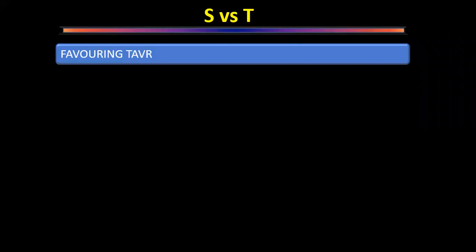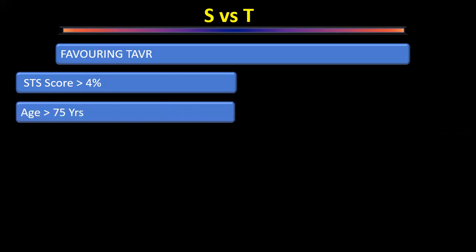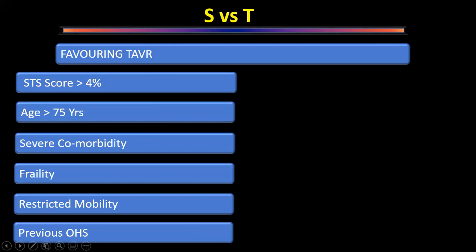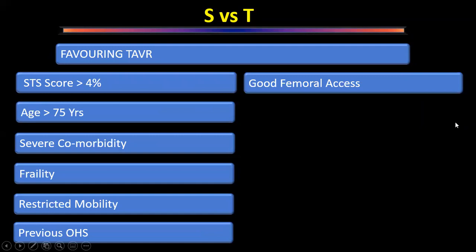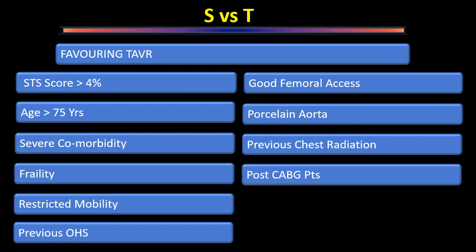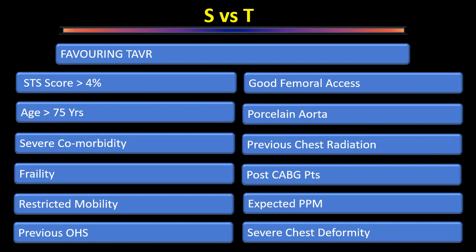Features favouring TAVI: STS score more than 4% (threshold has moved from 15% down to 4%), age more than 75 years, severe comorbidities, frailty, restricted mobility, previous open heart surgery making redo difficult, good femoral access, porcelain aorta, previous chest radiation, post-CABG with patent grafts just below sternum (high injury risk in redo), expected patient-prosthesis mismatch, and severe chest deformity making chest entry difficult.